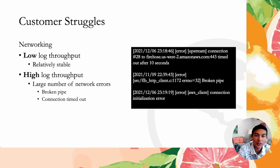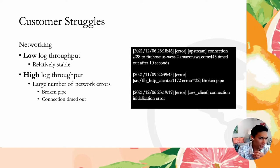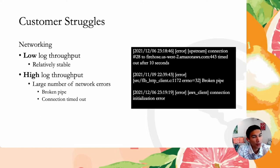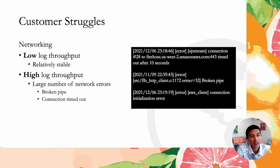When does this happen? In low throughput cases, it's relatively stable. As soon as you start sending logs at around 40 megabytes per second — for example, one kilobyte logs at 40 megabytes per second — you'll start to see errors on the right-hand side: connection timeouts, broken pipes, and connection initialization errors.